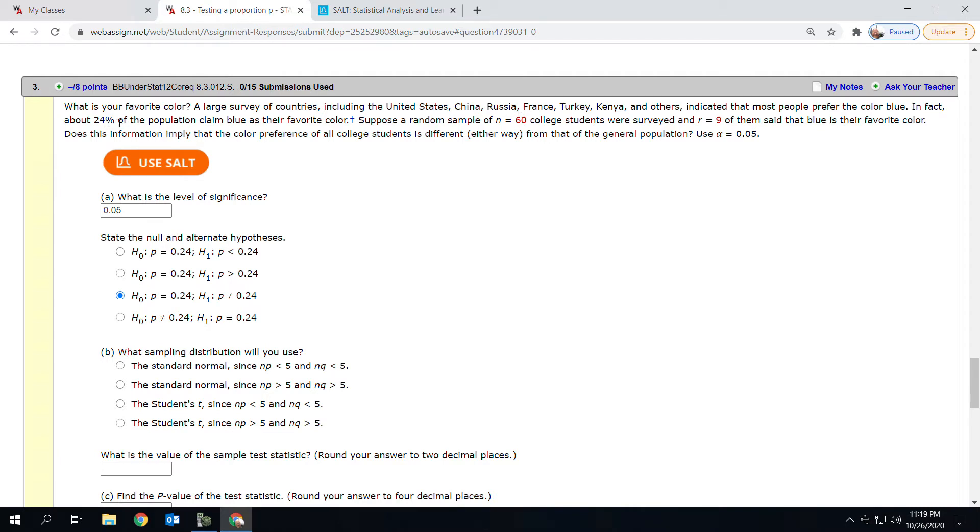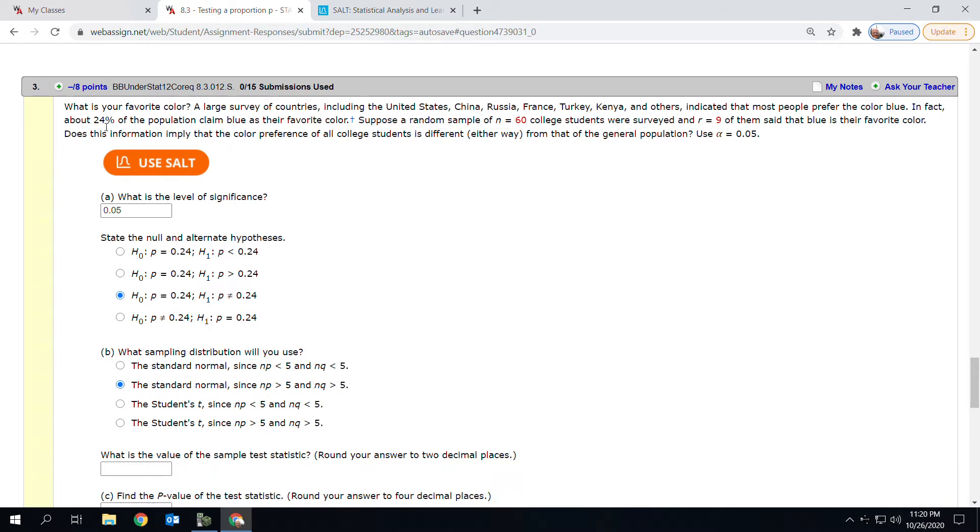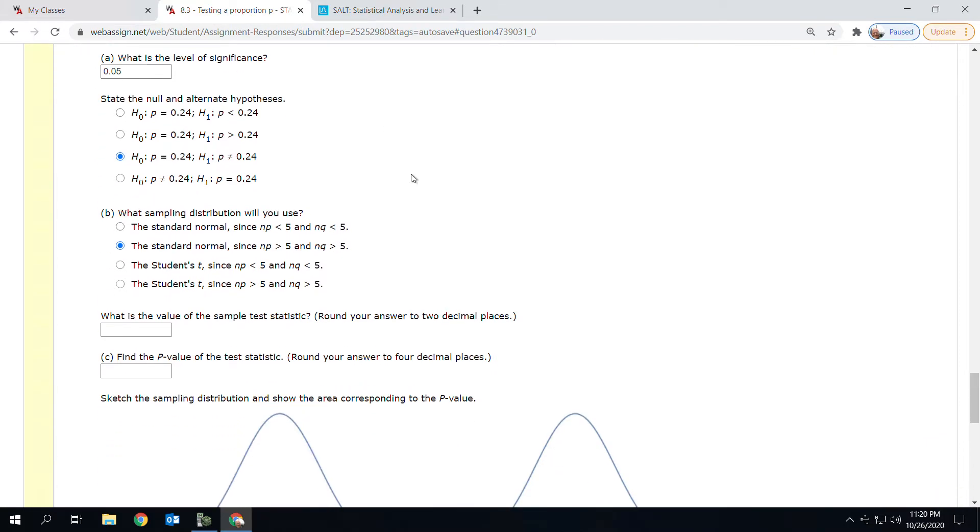60 times 0.24 is 14.4, that's above 5. So failure would be 76%, 60 times 0.76 or nq is 45.6, that's also above 5. So we're going to use a standard normal because np is greater than 5, that's 60 times 0.24, and nq is also greater than 5, 60 times 0.76. Q is failure. So we're going here, our sample statistic.